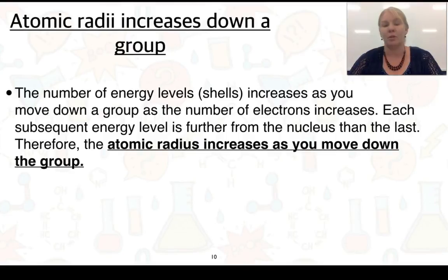Now we want to look at the atomic radii and why that increases going down a group. As we move down a group, the number of energy levels or shells increases. Each subsequent energy level or shell is further away from the nucleus than the last. And so therefore the atomic radius is going to increase as you move down the group.